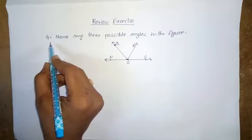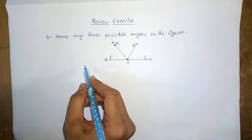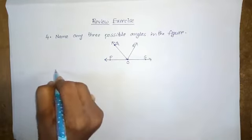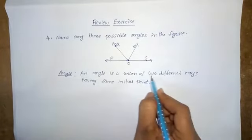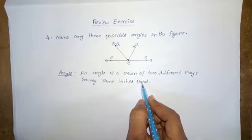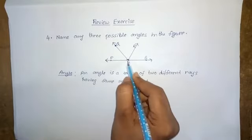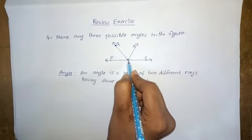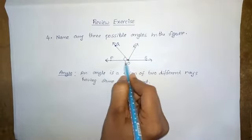Next, problem four: name any three possible angles in the figure. An angle is a union of two different rays having the same initial point. Observe this figure — OP is one ray and OQ is another ray. These two different rays have the same initial point O, forming angle POQ.